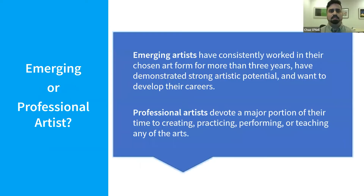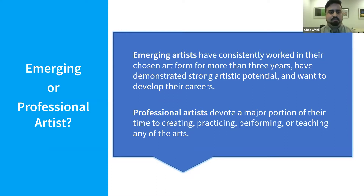Applicants must be at least 18 years old and cannot be a high school student or enrolled in a bachelor's or master's seeking program. What is the difference between an emerging or professional artist? Emerging artists have consistently worked in their chosen form for more than three years, have demonstrated strong artistic potential, and want to develop their careers. Professional artists devote a major portion of their time to creating, practicing, performing, or teaching any of the arts. Our colleagues at Art Possible will cover this more thoroughly.